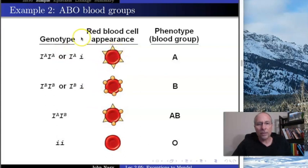If you're type A, then you have two I genes, both of which can be carrying A, which makes you A, or one of them could be A and the other one makes nothing at all, in which case all you express is A. Both of these individuals have phenotype A.